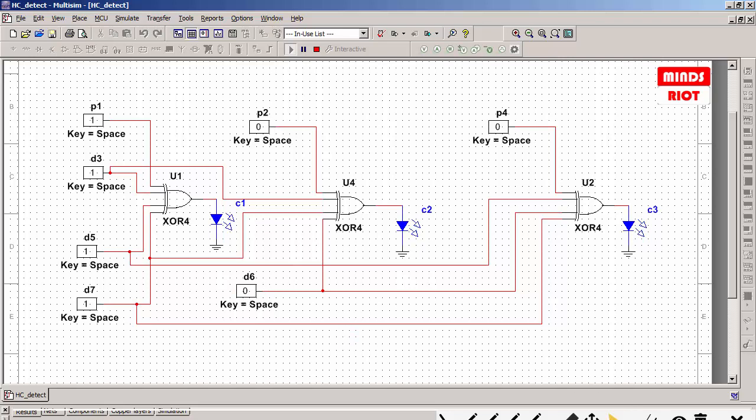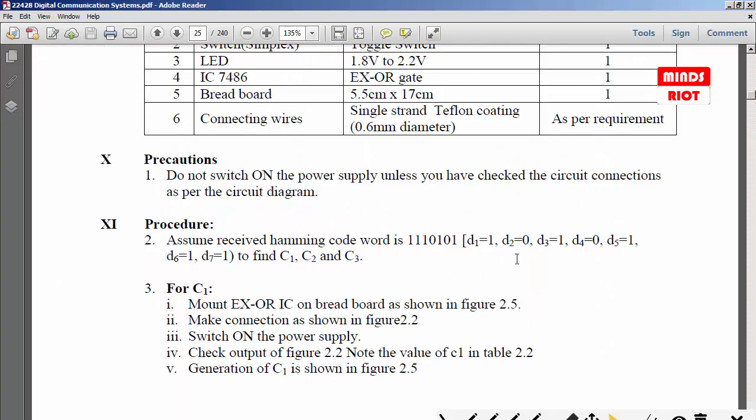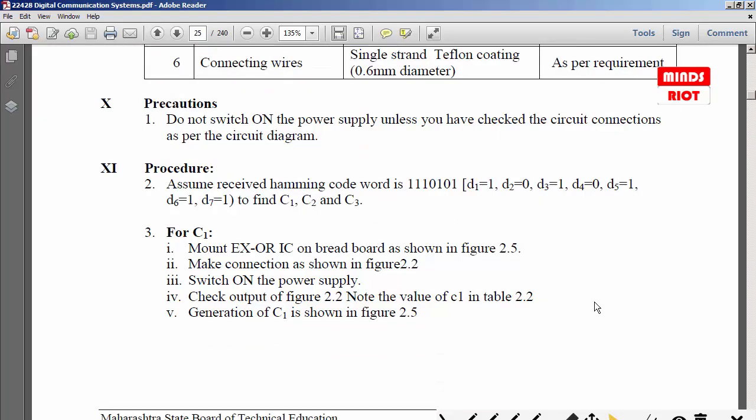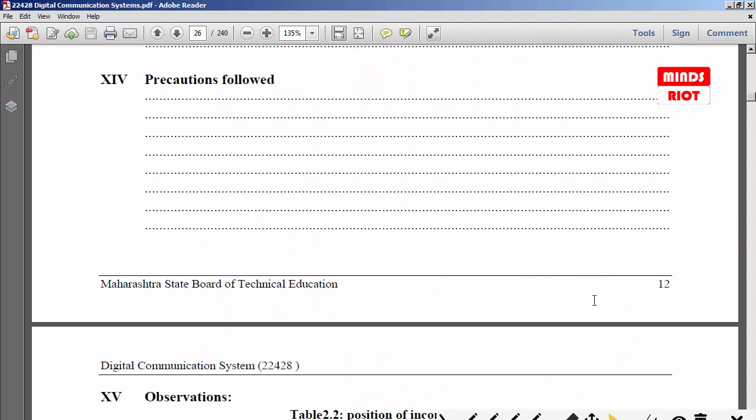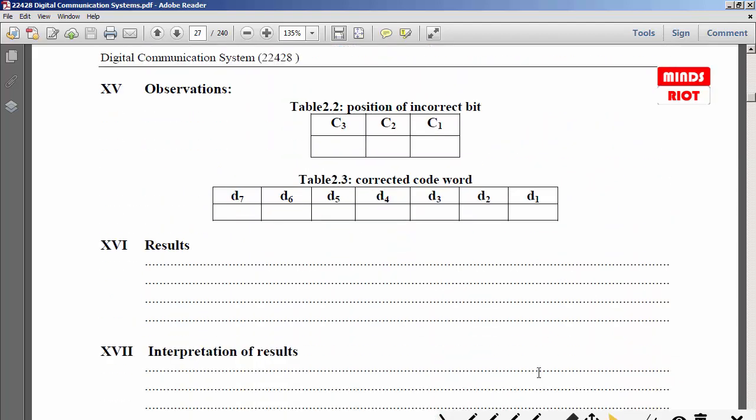You can check your manual. If any other data is required, you can make the necessary changes and complete the table. You can assume any data and find out whether any error is there. If any error occurs, you can alter the bit position and get the corrected data.